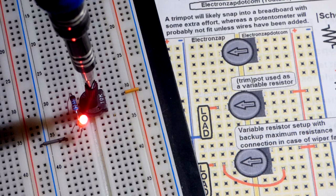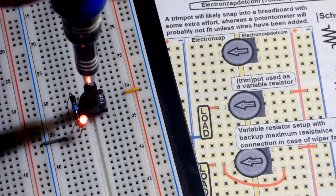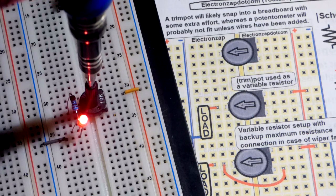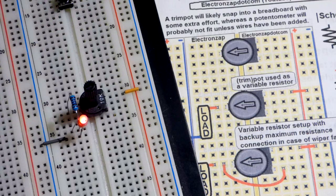And as you can see, the trim pot kind of disconnected from the board. It cut power completely. But in any case, that is using it as a variable resistor. So that is not terribly flexible.